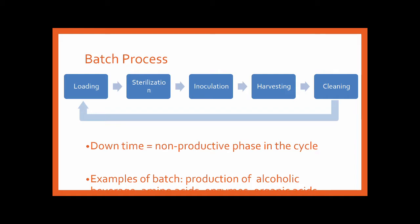This is a general layout of a batch process. You have a loading period where you load your culture media and raw materials, process and sterilize them, then inoculate the culture media with your organism. From inoculation to harvesting, your organism produces your product. After fermentation, you harvest, then clean your bioreactor for another loading. The downtime is the non-productive phase of the cycle, from cleaning up to the loading period.